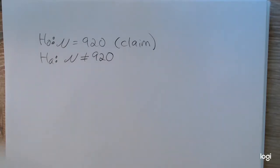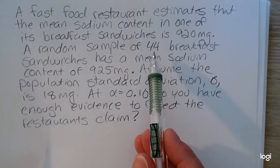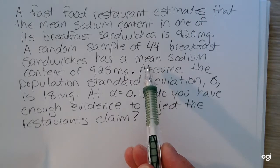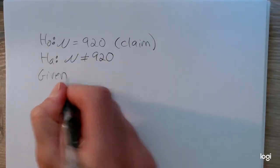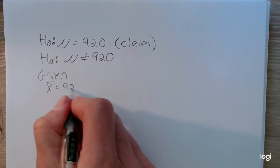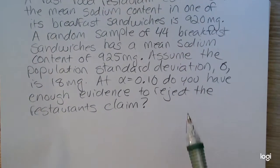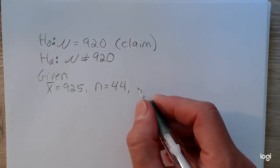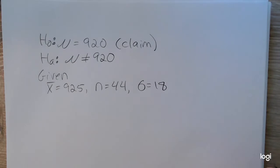Just to put down what we're given going back to the problem, we have a sample size of 44. From that sample, we got a mean sodium content of 925, so X bar is 925. Our sample size is 44. In this problem, we're told to assume that the population standard deviation is 18 milligrams. So we know from probably a prior study that sigma is equal to 18.